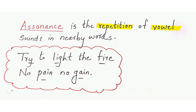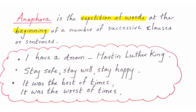Assonance is also repetition, but what is different here is that vowel sounds are repeated, and they don't have to be at the beginning of the words — they can be anywhere in the word. So the repetition of vowel sounds in nearby words is called assonance. Examples: 'Try to light the fire,' 'No pain, no gain.'